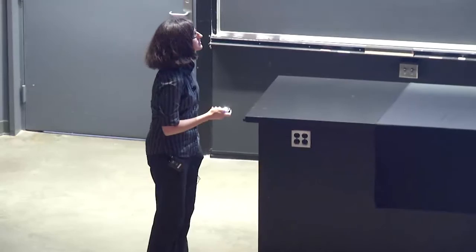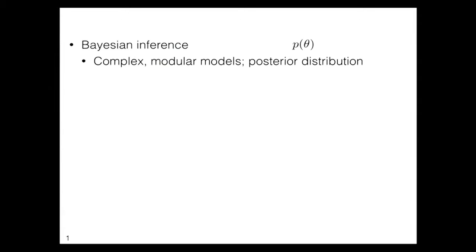There are a lot of problems where we really want to go beyond point estimates. If you're making some investment and you're interested in the expected value, you might make a really different investment if your expected value is $1,000 plus or minus $10 versus $1,000 plus or minus $1,000,000. These can make really big differences in decisions. Bayesian inference works by starting with a prior distribution, then gathering data and modifying the prior according to the likelihood. Bayes' theorem tells us the posterior distribution over the parameter given the data.